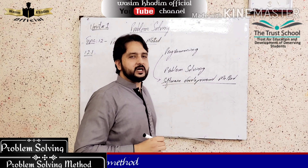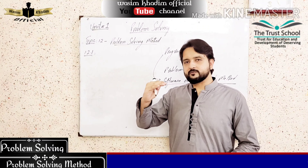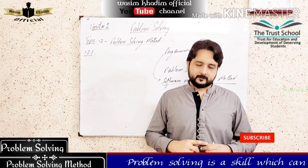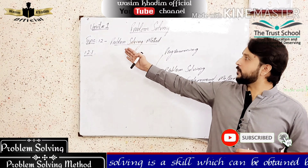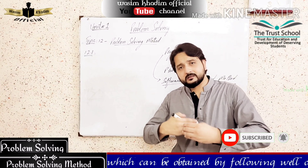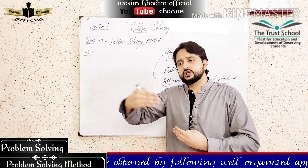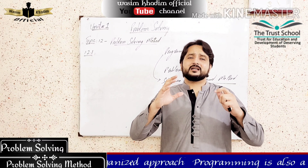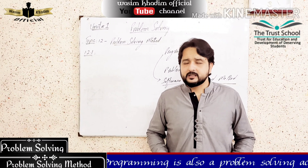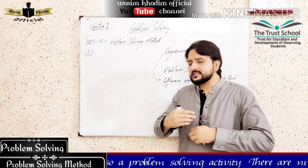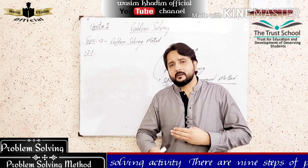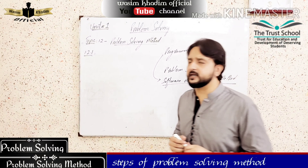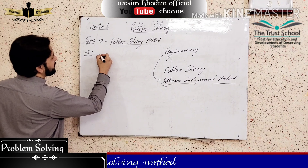The Software Development Method is a method that if you follow these steps, you can solve these problems easily. Basically, there are 9 steps. When you follow these steps, you can solve any programming-related problem. The first step is problem identification.